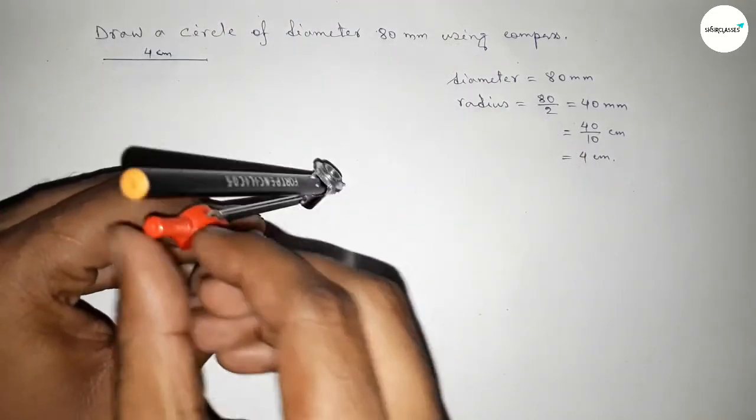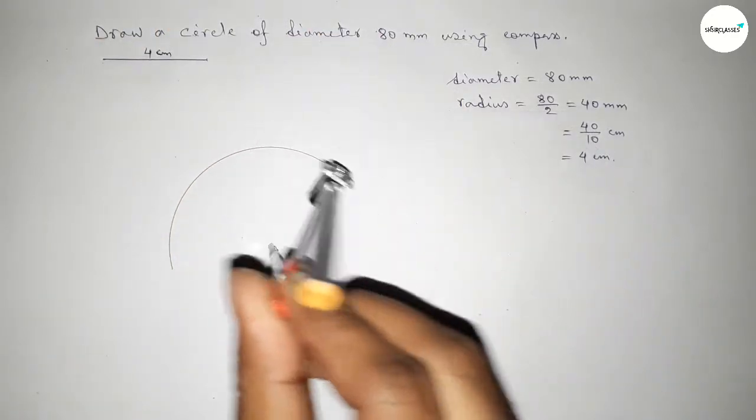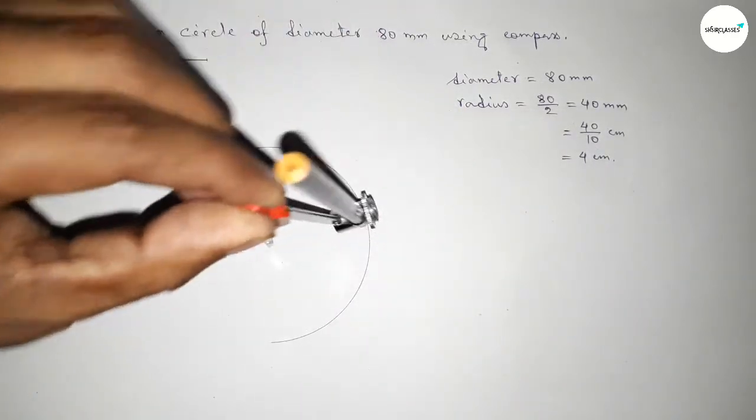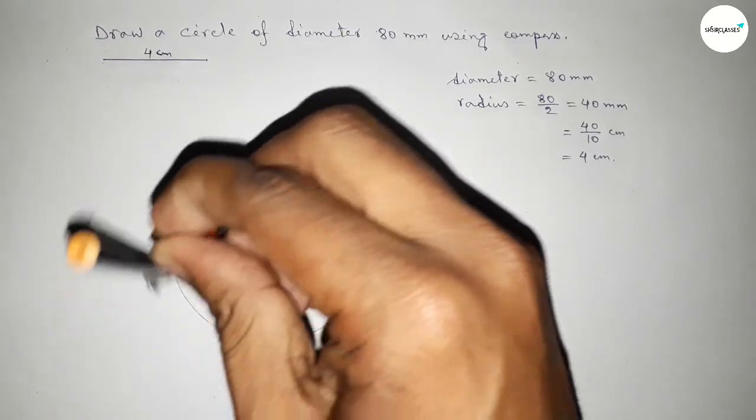Putting the compass on the point here, now drawing here an arc by this way.